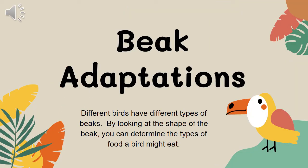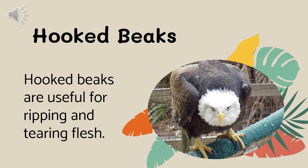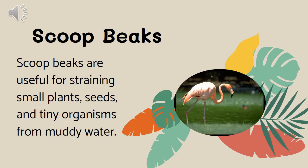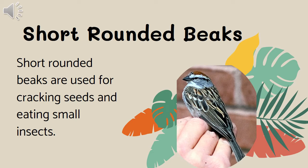In this next section we're going to look at beak adaptations. Different types of birds have different beaks, and those beaks tell us what types of food the bird would normally be eating. A hooked beak is useful for ripping and tearing flesh — these birds are carnivores eating small animals and small mammals. A scoop beak is useful for straining small plants, seeds, and tiny organisms from muddy water. These are water birds that scoop up water and filter out what they want.